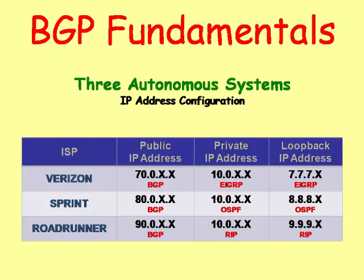Notice that all the public IP addresses are using BGP so that they can go from one network to another, like from Verizon to Sprint to Roadrunner. But the private IP addresses use internal routing protocols such as EIGRP, OSPF, or RIP. BGP is only interested in public IP addresses, not the private IP addresses.